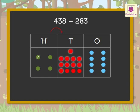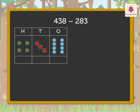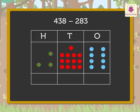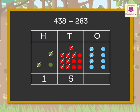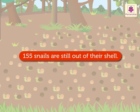We cannot subtract eight from three, so we regroup one green dot into ten red dots, since one green dot equals ten red dots. Now we represent four hundred thirty-eight with the regrouped dots. We cancel three blue dots, eight red dots, and two green dots. We are left with five blue dots, five red dots, and one green dot — that is one hundred, five tens, and five ones, which equals one hundred fifty-five. Thus, one hundred fifty-five snails are still out of their shells.